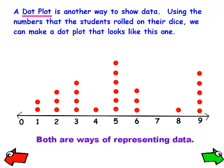A dot plot is another way to show data. Using the numbers that the students rolled on their dice, we can make a dot plot that looks like this one. We can see that the number 5 was rolled by 6 students, and the number 3 was rolled by 4 students. Both of these are ways of representing the data.